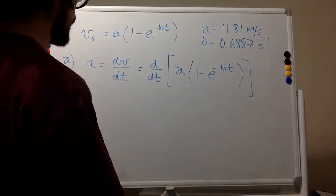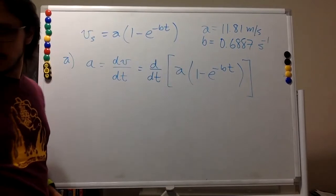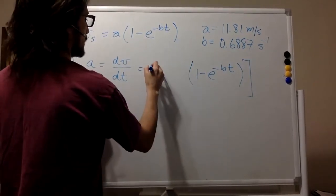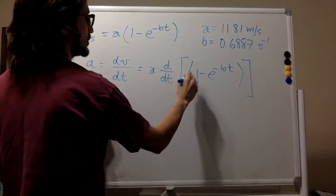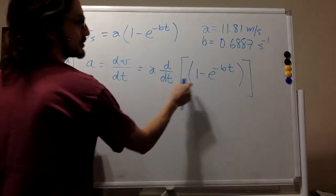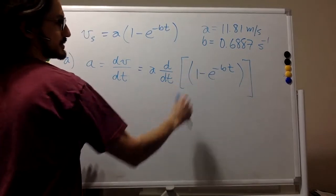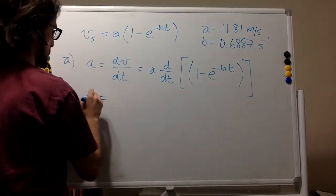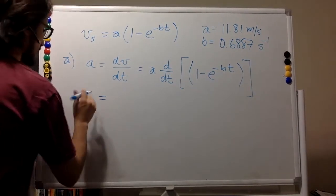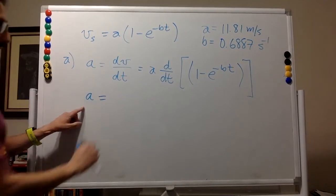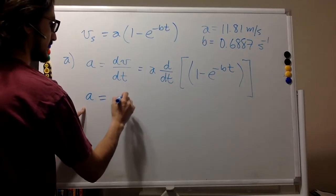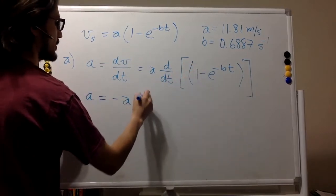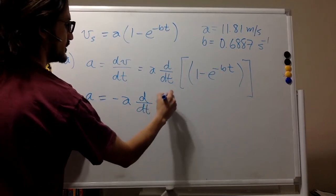The parameter a is a constant, so we can take it out of the derivative. The derivative of a constant — in this case 1 — is 0. So we end up with negative a times the derivative with respect to time of e to the minus bt.